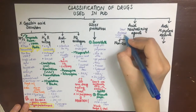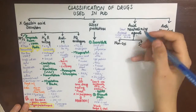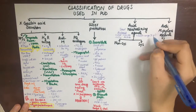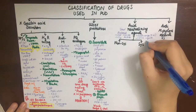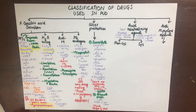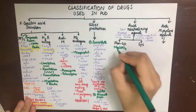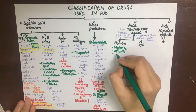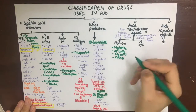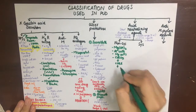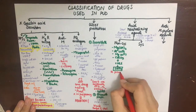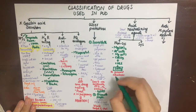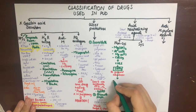An ideal antacid should be insoluble and not absorbed, should not liberate carbon dioxide, should not disturb the acid-base balance of the body, should have quick and prolonged action, be inexpensive, have a buffer range between pH 1 and 6, and have minimal drug interactions. Non-systemic acid neutralizing agents include magnesium hydroxide, aluminum salts, magnesium salts, and calcium carbonate. They react with HCl in the stomach to produce salts. To prevent alkalosis, they neutralize bicarbonate in the intestine which is not absorbed, so they do not cause metabolic alkalosis.